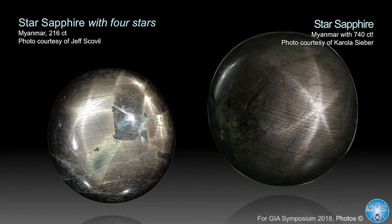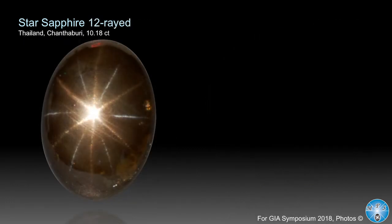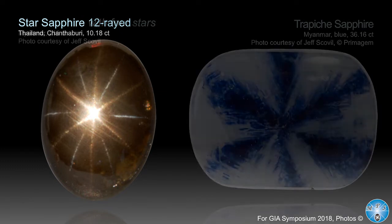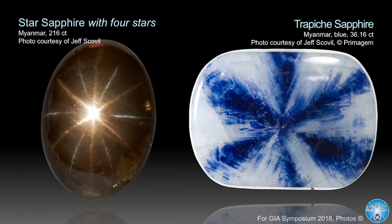This star sapphire is 740 carats — as big as an American silver eagle dollar. It has a quite good star, but on the other hand the dome is not very high; it's pretty flat, so the star is a little bit wishy-washy and not very sharp. Then we have a 12-ray hematite causing the star — a kind of black star sapphire — and they can even show two different colors.